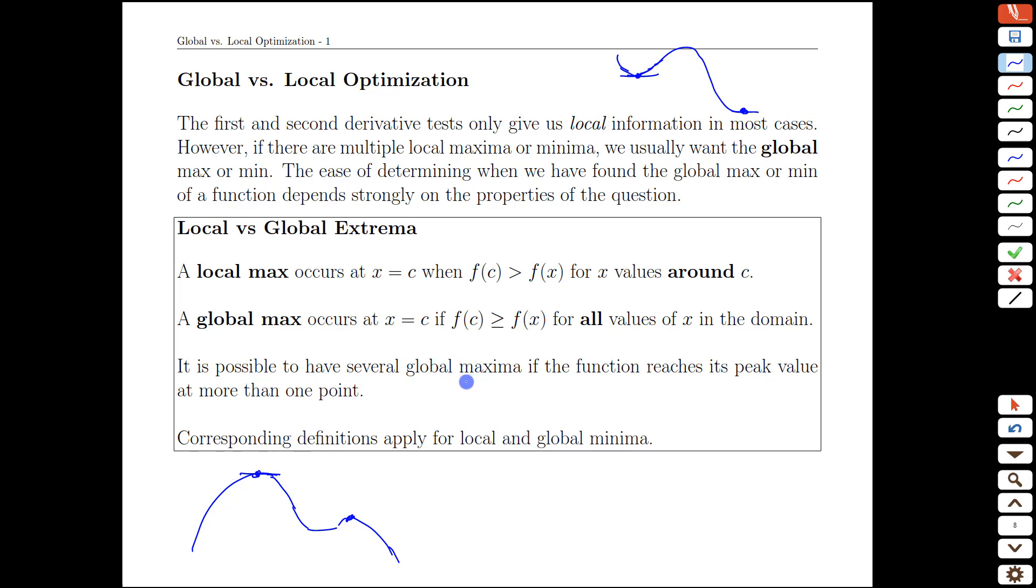It is possible to have several copies of a global maxima, and you can think of that through the example of sine of x. Sine of x goes up and hits one, and then it goes up and hits one again, and then it goes up and hits one again. All of these are points that are the highest or possibly equal to all the other points on the graph, so we have a repeated global maximum for that kind of example. The same kind of definitions apply if we're looking at minima as well; we just flip the direction of these inequalities.